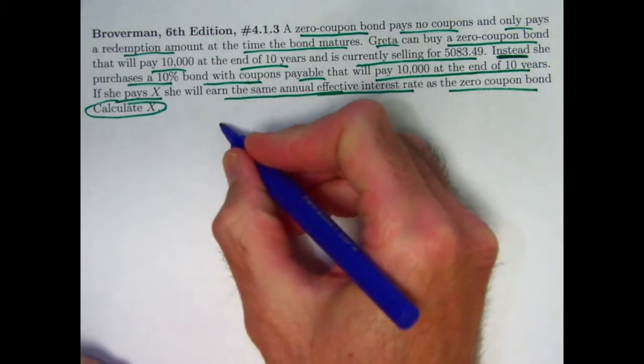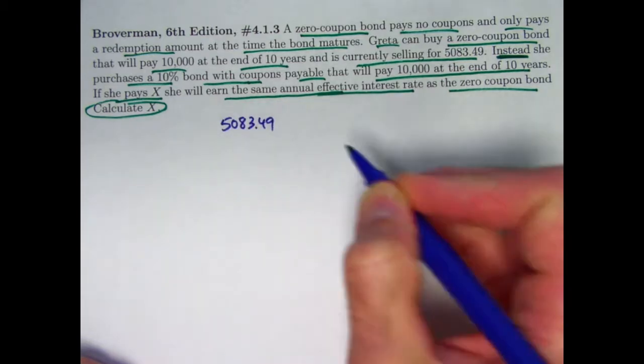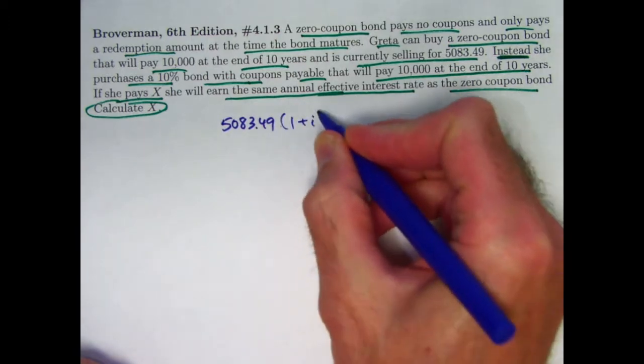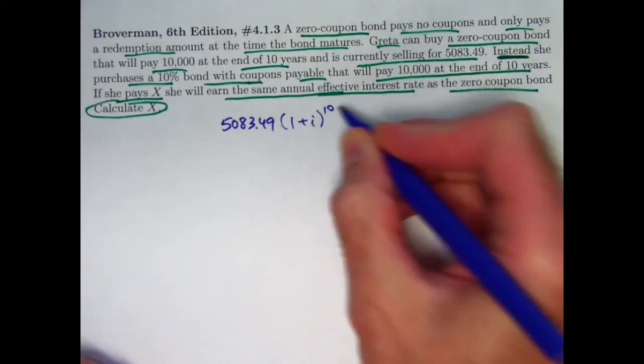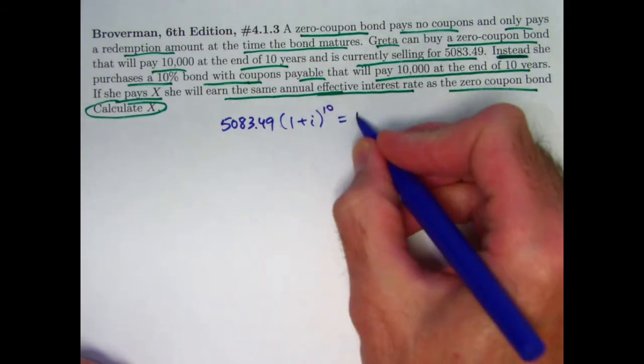With the first bond, you know, effectively you are just investing $5,083.49. That's its price. At time zero, it needs to accumulate to $10,000 after 10 years. And I is the annual effective interest rate, so this has to equal $10,000.